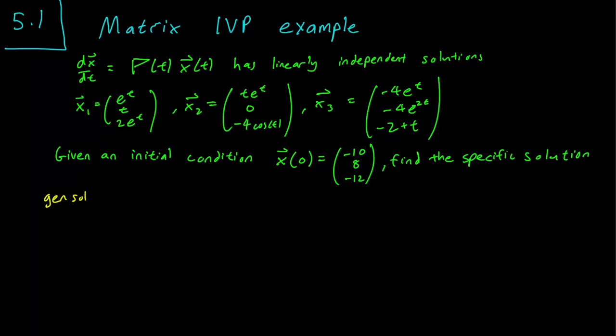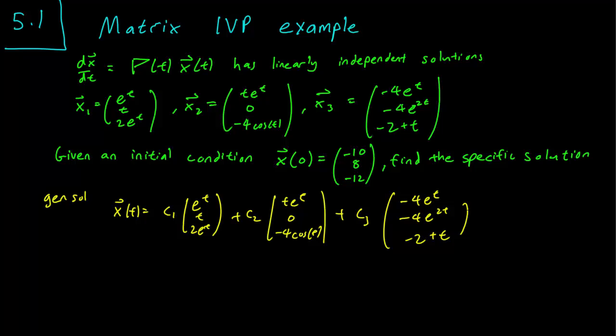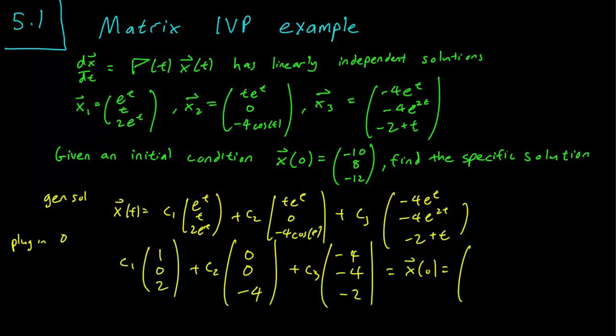So let's go about it and first write the general solution. The general solution is going to be x equals c1 times this plus c2 times the second solution plus c3 times the third solution. We are given the initial condition, so plug in 0 and we have that this entire thing is equal to x hat 0, or minus 10, 8, minus 12.